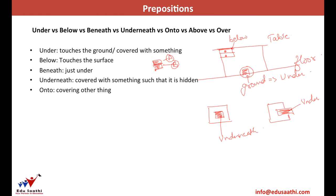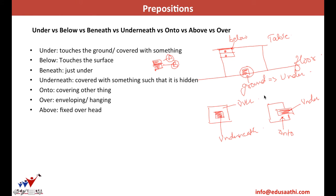'Onto' is used when the thing above does not completely envelop the thing below, whereas 'over' is used when one thing completely envelops another. 'Over' is also used with things that are hanging or moving above — for example, 'birds fly over the head' because they are moving. But if something is fixed above, it uses 'above' — for example, 'there is a fan above my head, but a sword hanging over my neck.'